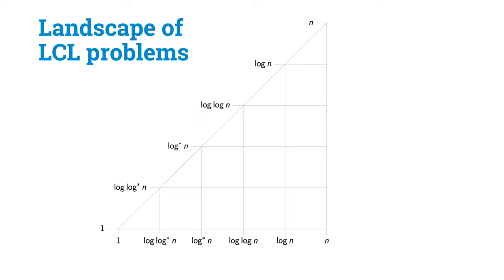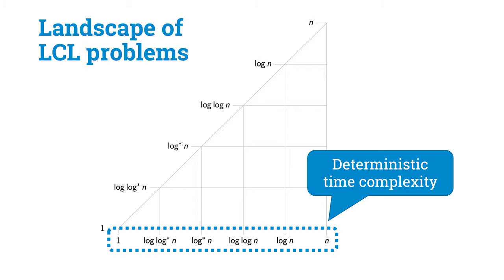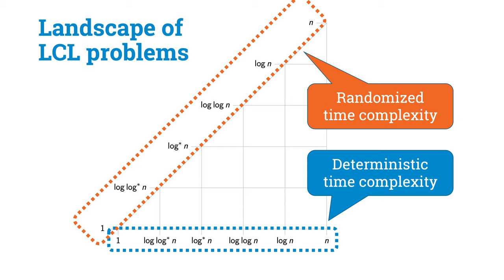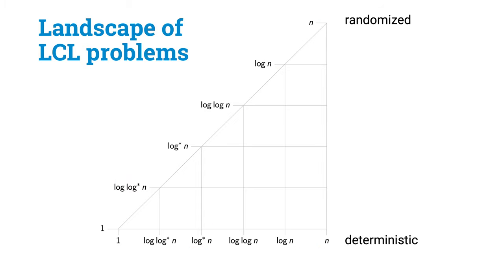Now let's draw a picture that shows the landscape of all LCL problems. I'll put on the horizontal axis possible deterministic complexities between local and global — constant, log log star, log star, log log n, log n, linear. And remember that linear is as bad as it gets: linear means brute force, and with linear distance you already see everything. I'll put randomized complexities on the vertical axis — again, constant, log log star, log star, and so on. Since randomness can't ever hurt, we'll always be somewhere inside this triangle. And what I'll try to do is put all possible LCL problems on this map.